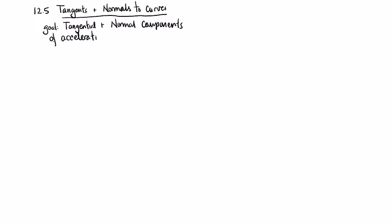That may seem a bit vague about what we mean by that, and that's all right for now. So we'll set an initial sub-goal: given a curve in two-dimensional space or three-dimensional space, we'd like to get a hold of two unit vectors — one of them tangent to the curve, and one of them perpendicular to the curve.